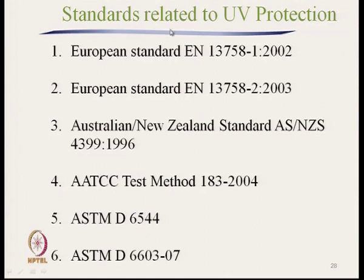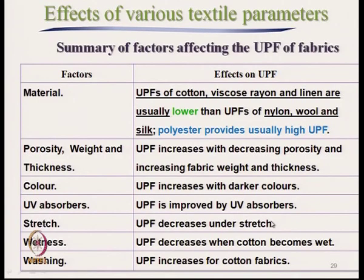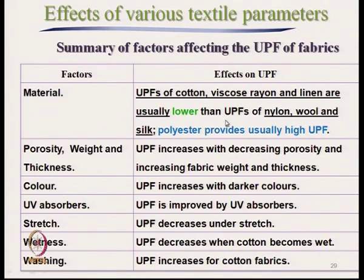These are the standards related to UV protection: European standard, Australian and New Zealand standard, AATCC test method for UPF test, and ASTM test methods. As far as materials are concerned, UPF value changes with different types of materials. UPF of cotton, viscose rayon, and linen are usually lower — these are cellulosic materials — than nylon, wool, and silk. Polyester is found to have a high UPF value.